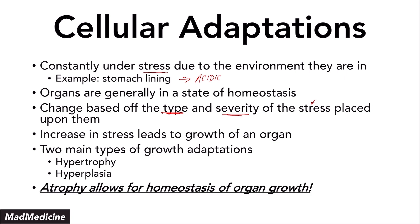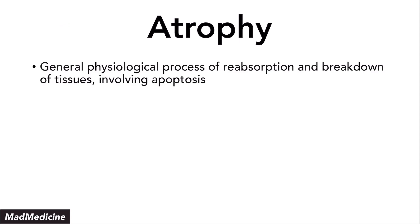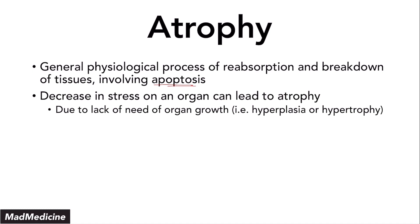The way we reverse hypertrophy and hyperplasia is through atrophy. Atrophy allows for homeostasis — when you have an increase in stress you grow in size, but when you reduce the stress afterwards, you have to go through atrophy. Atrophy is essentially the physiologic process of reabsorption and breaking down of tissue. It involves apoptosis, and that's a very high-yield factor. Apoptosis is one way we can undergo atrophy. Essentially, when you decrease the stress on an organ, that organ has to go back to its original size because there is no longer a stimulus to go through hyperplasia and hypertrophy.